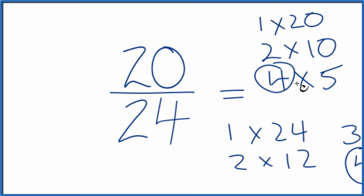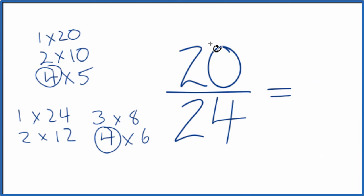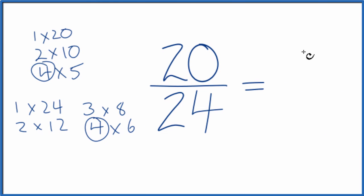Let's move these over here. Then we'll divide 20 by four, that'll give us five. And we'll divide 24 by four, which gives us six. And we're done.